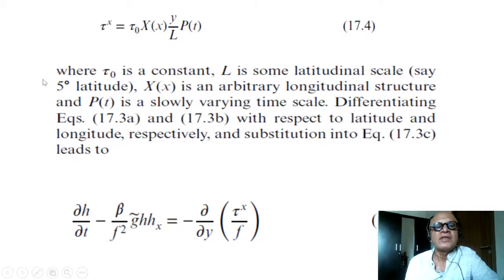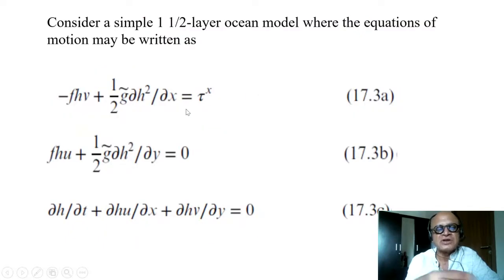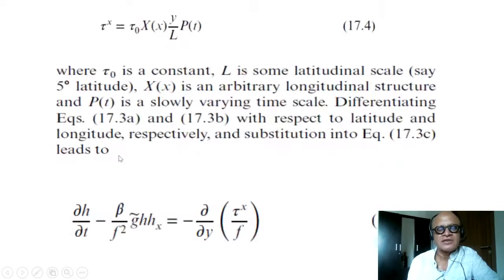The key part is that the wind distribution in the Indian Ocean has this kind of structure with westerlies to the north and easterlies to the south. If you have this kind of zonal-meridional distribution with seasonal variability, you can plug that into these equations.